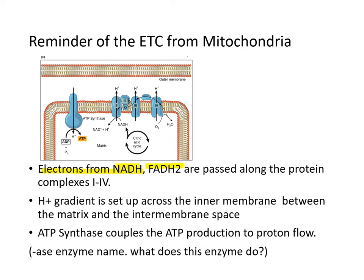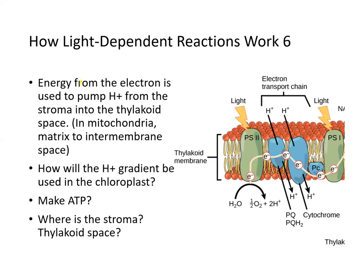Electrons from NADH and FADH2 are passed along protein complexes I through IV. In doing so, in the inter-membrane space, the proton motive force is generated. The proton gradient is set up across the inner membrane between the matrix and inter-membrane space, and ATP synthase couples ATP production to the proton flow — protons flow down the gradient and ATP synthase uses that energy to produce ATP. In light-dependent reactions, the energy from electrons is used to pump protons from the stroma into the thylakoid space — analogous to matrix to inner membrane space in mitochondria.